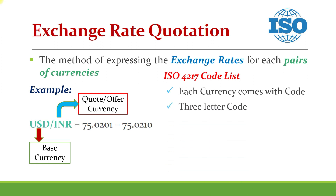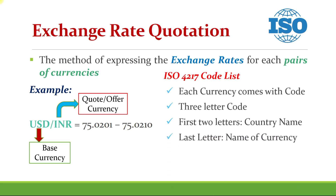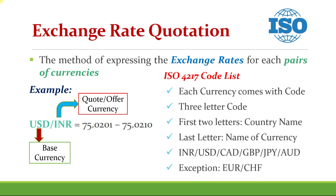The three-letter code is made up of two aspects. The first two letters represent the country's internet code and the last letter represents the country's currency name. For example, INR: 'IN' is the country code of India and 'R' represents the Indian currency rupee. Likewise, USD: 'US' represents the USA and 'D' represents dollar. CAD: 'CA' represents Canada, 'D' represents dollar — Canadian dollar. Similarly, GBP, Japanese yen, and Australian dollar. However, there are exceptional currencies for which this method is not applicable, such as Euro and Swiss franc (CHF).